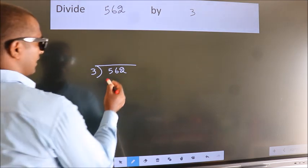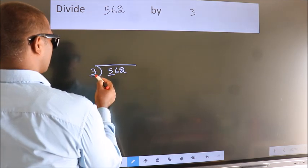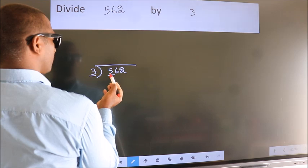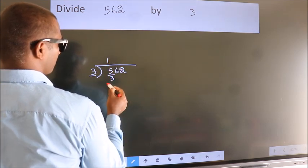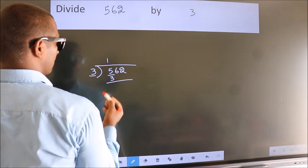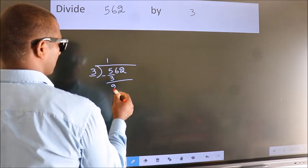Next, here we have 5, here 3. A number close to 5 in 3 table is 3 1s 3. Now, we should subtract. We get 2.